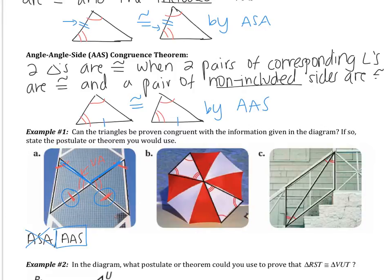Looking at example B, I notice I have three pairs of angles congruent. Is there anything else I know? There are no other congruencies marked, so all I have are three pairs of angles. That is not a congruency theorem, so we would say that these triangles are not congruent.